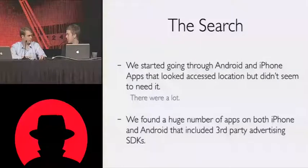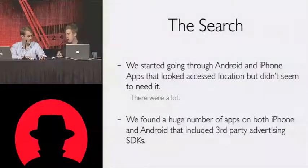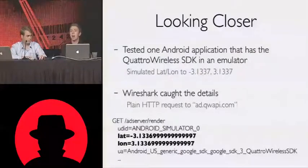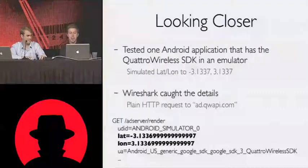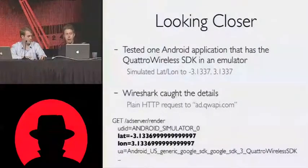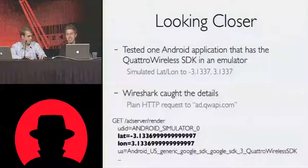It's the Gmail value proposition, right? Gmail looks at your email in order to serve you more targeted ads so you don't have to see a giant banner. And people are aware of this. So when we looked closer, one application in particular — we looked at the Quattro Wireless SDK. In the Android simulator, we were actually able to pretend we were at coordinates 3.1337, and we wire sharked it. We found a plain text HTTP request to add.quappy.com, which is Quattro Wireless' ad servers. Sure enough, we have a poorly rounded version of our latitude and longitude being sent in plain text to an ad server.